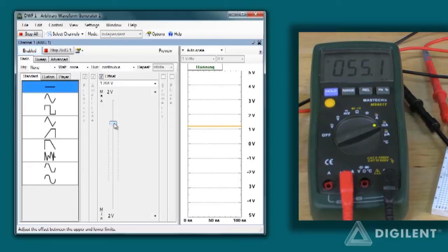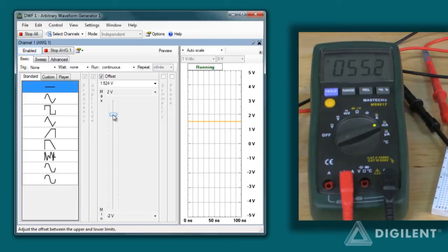By the time we get to about a volt across the diode, the diode's passing the maximum amount of current that the waveform generator can provide, and increasing the voltage further doesn't change the current.